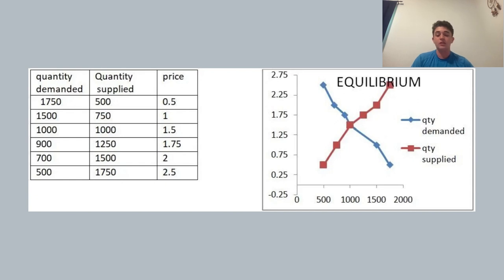Moving on again, we have the equilibrium curve points, which is the quantity demanded curve and the quantity supply curve together, basically. And the equilibrium is the point at which a particular price, both quantity demanded, is equal to quantity supplied. So in this specific graph, we can see that at a price of $1.50, both quantity demanded and quantity supplied are equal at 1,000.